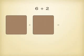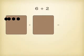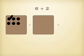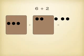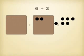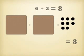So 6 plus 2 would be 1, 2, 3, 4, 5, 6 — and 1, 2. I'm going to add them together, merging them all together, and I get 8. So 6 plus 2 is 8.